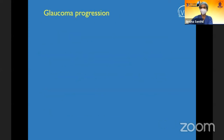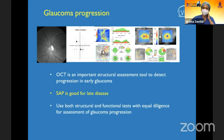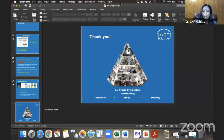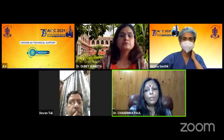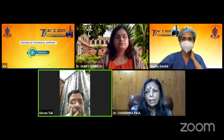In summary, OCT is very important for early detection and monitoring progression of glaucoma, but results must be interpreted in context — considering IOP and visual fields — before making clinical decisions. Thank you. Dr. Sirisha, that was a great, informative, and relevant talk, with all the salient features covered.